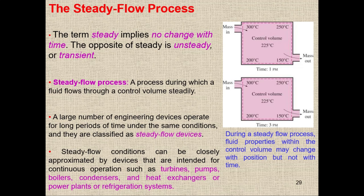We also define one more flow process called the uniform flow process. The definition of uniform flow is: if there is no change in the property with respect to location — not with respect to time. So if water is coming in at 300°C, it should be 300°C at all locations across the cross-section. Uniform flow is with respect to location, while steady flow is with respect to time — please don't confuse the two.